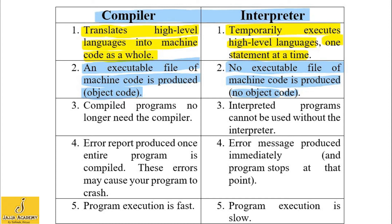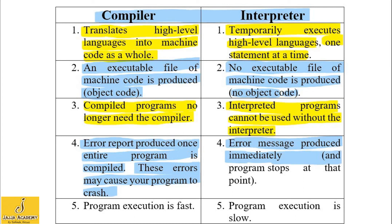Once a program is compiled, the compiled program no longer needs the compiler. But interpreted programs cannot be used without the interpreter. An error report is produced after the entire program is compiled, at the end of the compilation process, and these errors may cause the program to crash. In the case of an interpreter, an error message is produced immediately and the program stops at that point. Finally, program execution is faster with a compiler, whereas with an interpreter, program execution is slower.